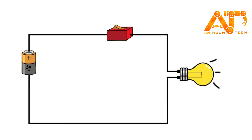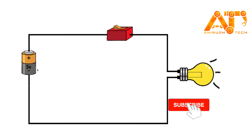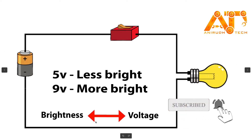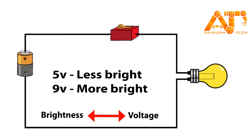Consider we have a bulb and a 5 volt battery. Our bulb will glow more brightly with a 9 volt battery than with a 5 volt battery. So we can say that brightness is directly proportional to voltage or current.